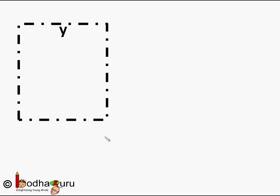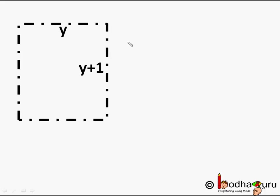Let's say the width is y meters, then length will be y plus 1 meter because length is 1 meter longer than the width. And we know the area of rectangle is equal to length into breadth.